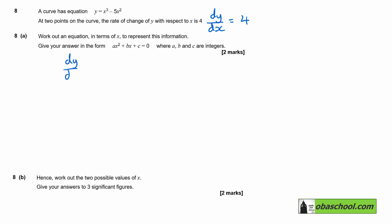So dy/dx is going to be, starting with the x cubed, 3 comes down in front and multiplies, and we reduce the power by 1.